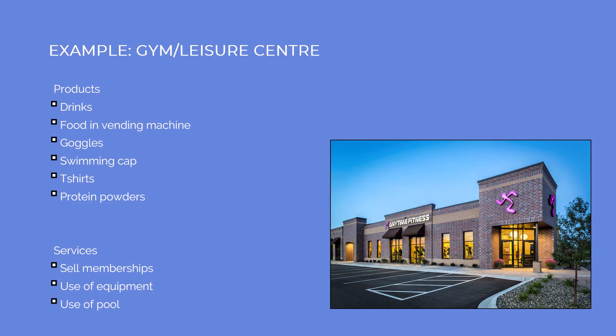An example from a gym or leisure centre: things that are products include drinks and food from the vending machine. If there's a swimming pool, you can sometimes buy goggles and a swimming cap. Sometimes they sell t-shirts with the gym's logo on, and you can also often buy things like protein powders. The service is the actual membership — the fact that you can use the equipment and use the swimming pool.